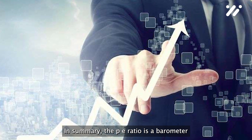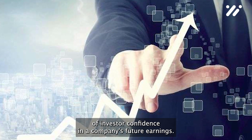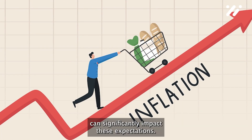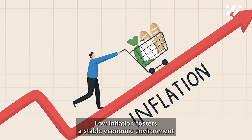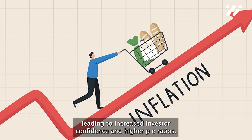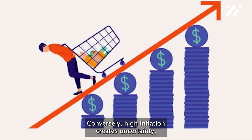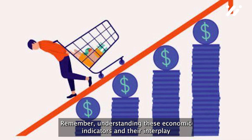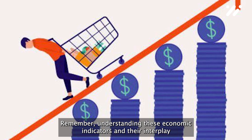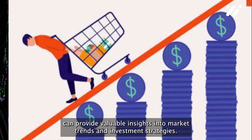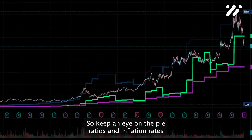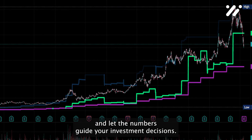In summary, the P.E. ratio is a barometer of investor confidence in a company's future earnings. Inflation, as a measure of economic stability, can significantly impact these expectations. Low inflation fosters a stable economic environment, leading to increased investor confidence and higher P.E. ratios. Conversely, high inflation creates uncertainty, driving down investor confidence and P.E. ratios. Remember, understanding these economic indicators and their interplay can provide valuable insights into market trends and investment strategies. So keep an eye on the P.E. ratios and inflation rates and let the numbers guide your investment decisions.